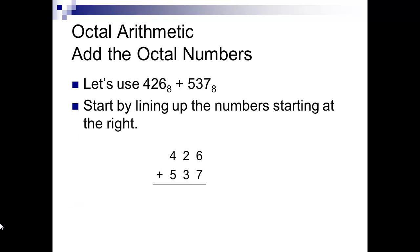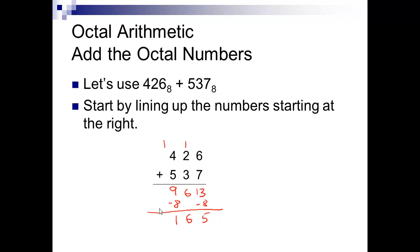We're going to add 4,2,6 and 5,3,7 in octal. First, 6 plus 7 is 13. What you look for is: if the answer you get is equal to the base or larger, you subtract the base and carry a 1. So 13 minus 8 is 5, carry a 1. Then 3 plus 2 plus 1 is 6 — that's not 8 or higher, so we just bring the 6 down. And 4 plus 5 is 9 — that's base or larger, so subtract 8, carry a 1, and bring the 1 down. Our answer is 1,1,6,5 in base 8.